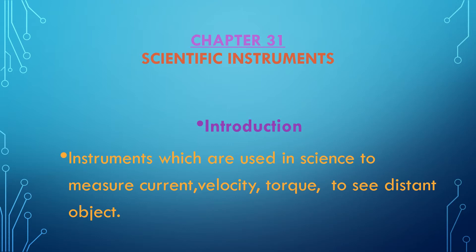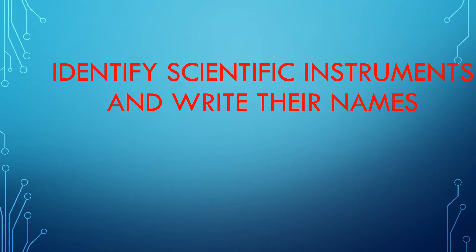Let us study Chapter 31: Scientific Instruments. What are scientific instruments? Instruments which are used in science — the instruments which are used by our scientists to measure current, velocity, torque, or to see distant objects. They are like small complicated machines used by scientists to measure current, velocity, earthquake, direction of wind, torque, and many more things.